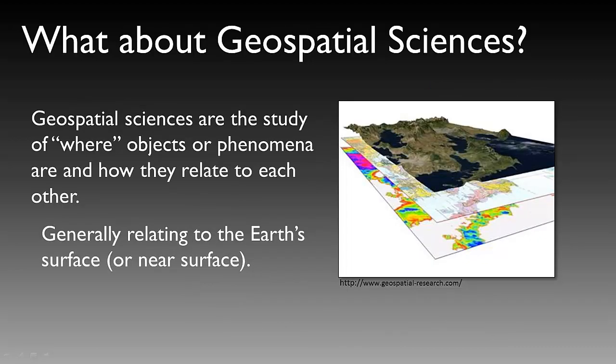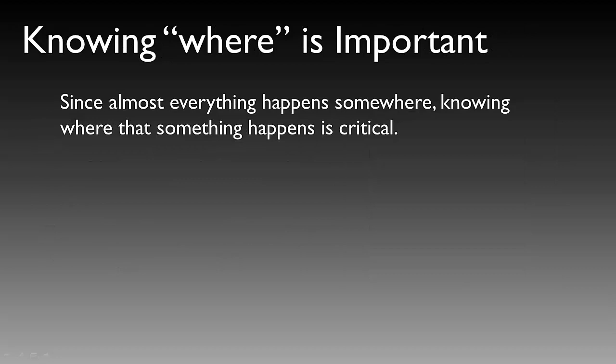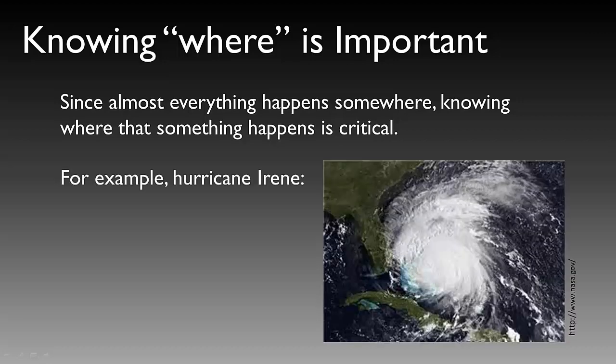Geospatial sciences is the study of where objects or phenomena are and how they relate to each other on the surface of the Earth. It generally relates to the surface but can also relate to near-surface events such as climate, precipitation, wind, and temperature. Since almost everything happens somewhere, knowing the XY location — the coordinate or spatial location — is extremely critical. As an example, a number of years ago we had Hurricane Irene that impacted Florida, which illustrates why knowing where is very important.